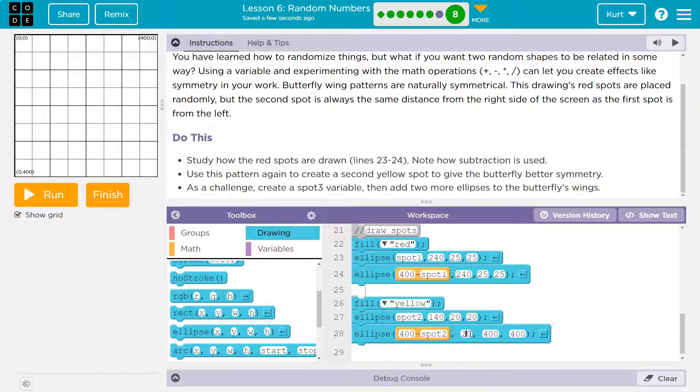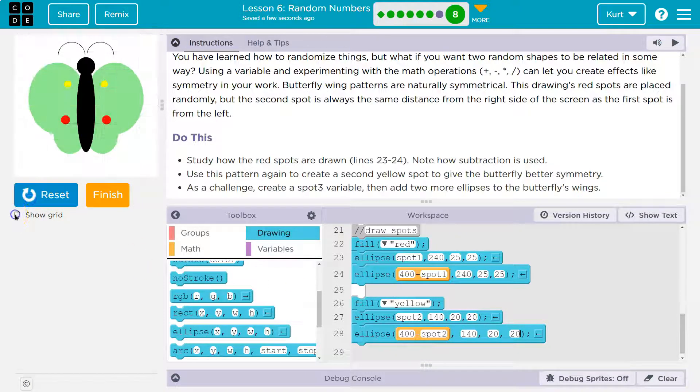So yeah, that would make sense. They need to have the same Y value if they're in the same spot. So my Y value 140, 140, and then let's do 20 and 20. Reset, run. Whoops. There we are.